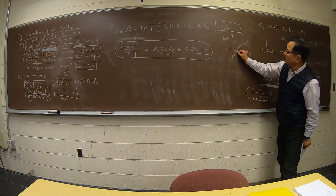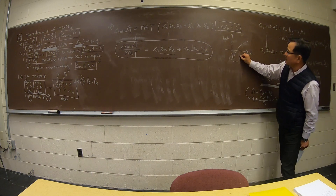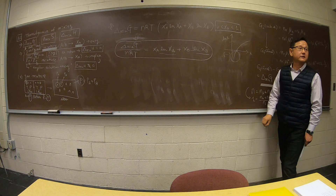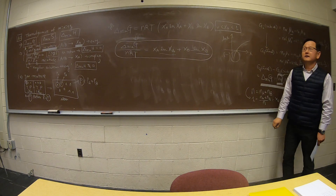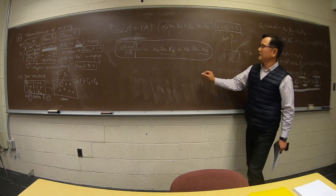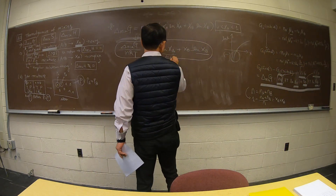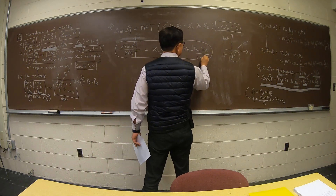Since X_A is between 0 and 1, ln(X_A) is always negative. Therefore, each term X_A ln X_A and X_B ln X_B is negative, meaning ΔG_mix is always negative — confirming that mixing is spontaneous.